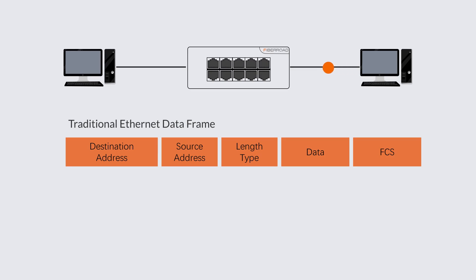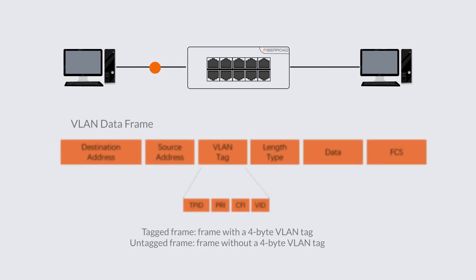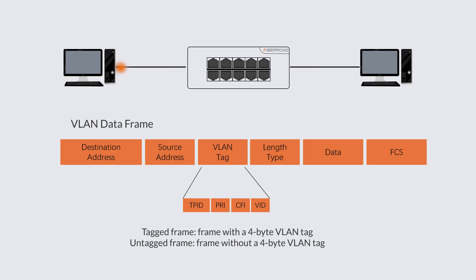A switch identifies packets from different VLANs according to the information contained in its VLAN tags. IEEE 802.1Q adds a 4-byte VLAN tag between the source/destination MAC address and length/type fields of an Ethernet frame to identify the VLAN.